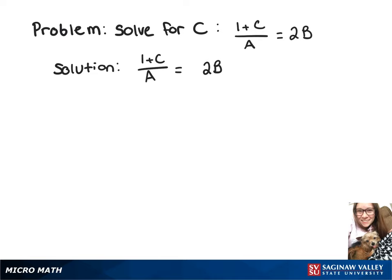We've got the equation 1 plus c over a equals 2b, and we want to solve for c. So we'll start by multiplying both sides by a. Now we've got 1 plus c equals 2ab.